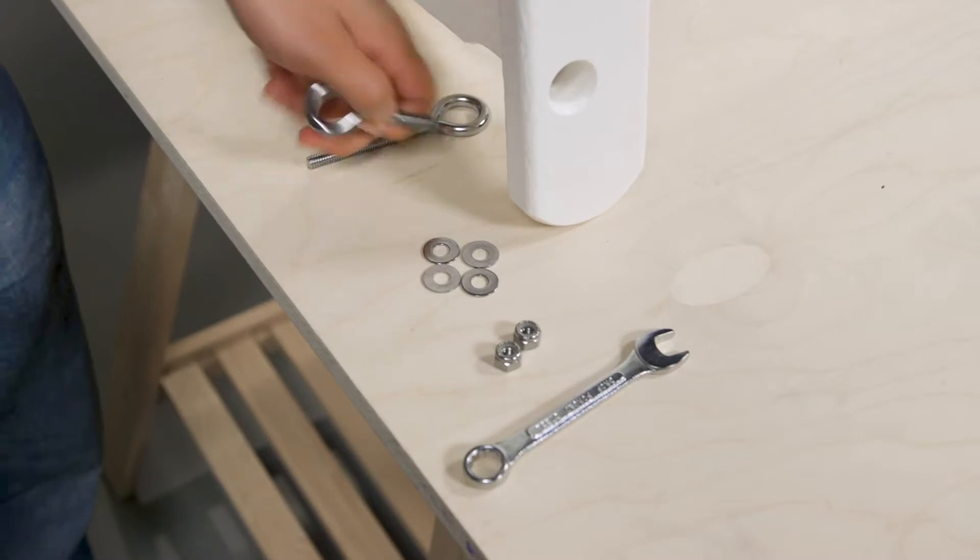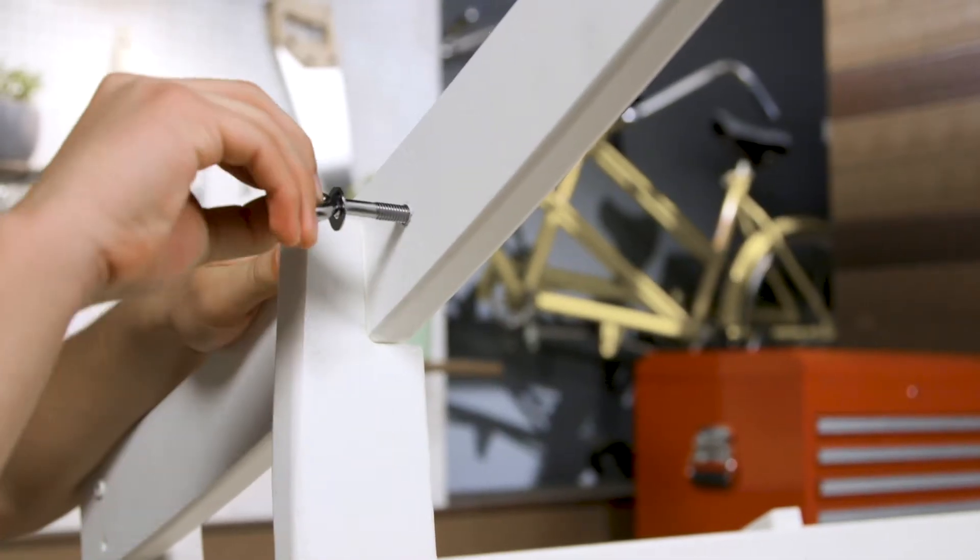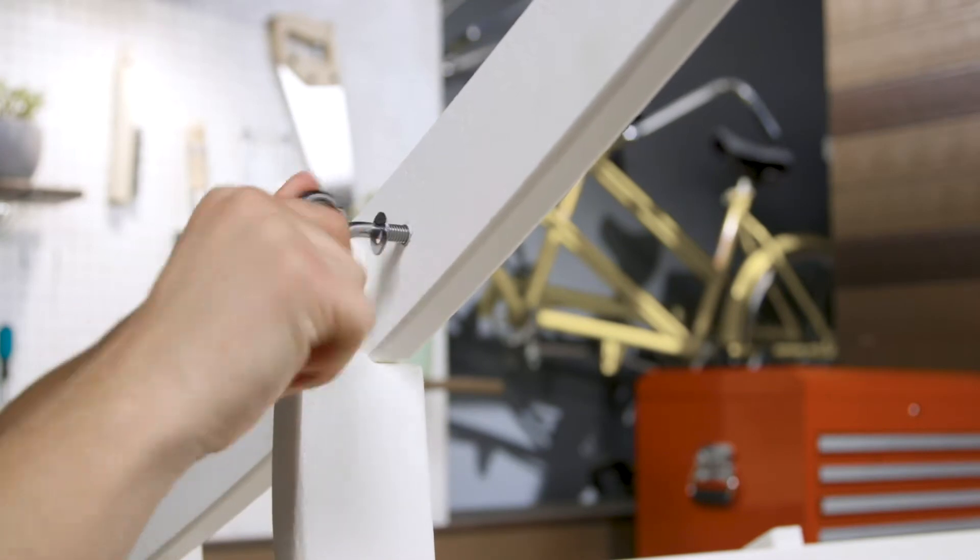Attach all four eye bolts to the swing. The shorter eye bolts should be attached to the back of the swing using two nylock nuts and four flat washers as shown.